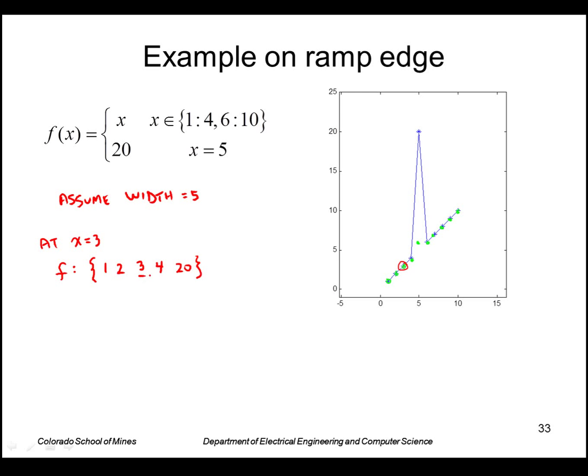So I take the median which is the middle one, and the output g is 3. At x equals 4, the values within the neighborhood are 2, 3, 4, 20, and 6. I sort those to get 2, 3, 4, 6, and 20. So the median again is the middle one. So g of 4 is 4.